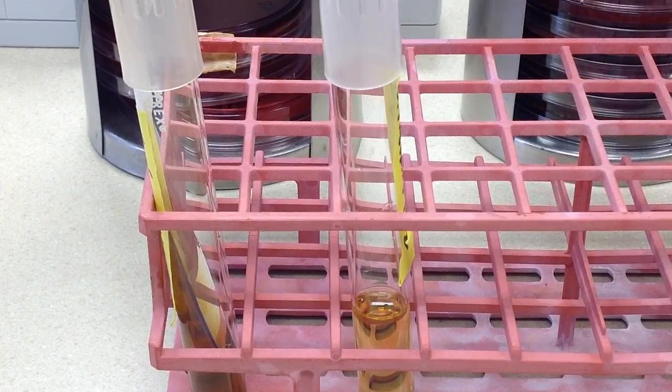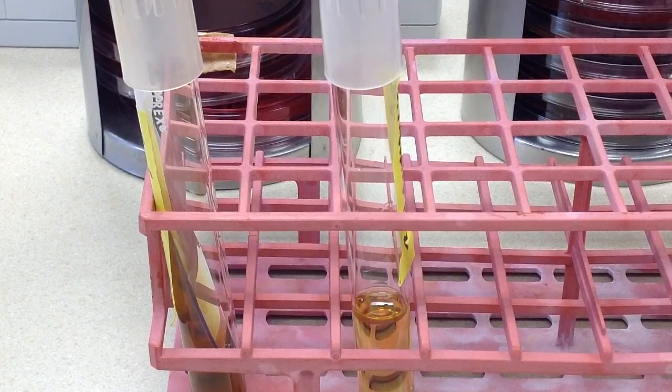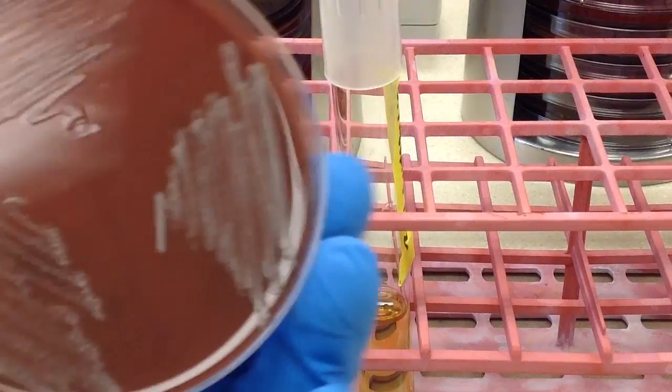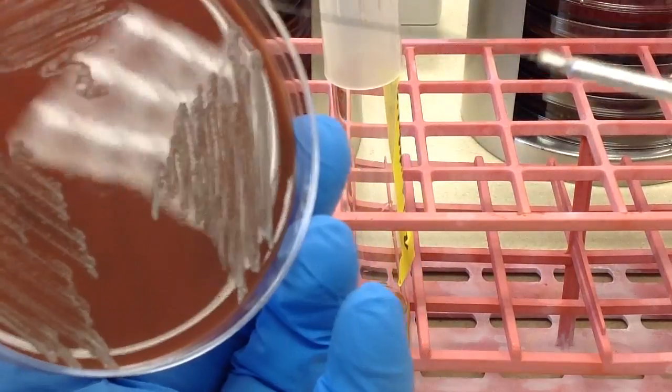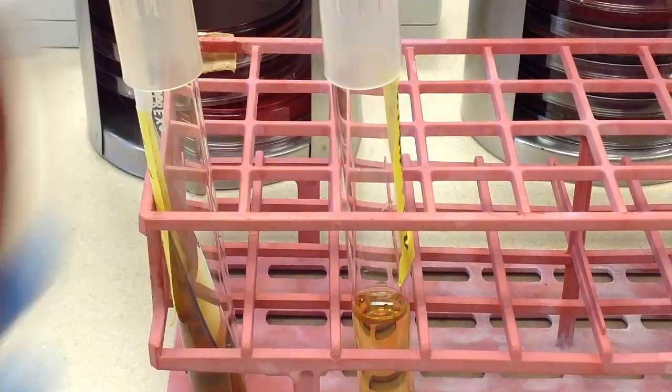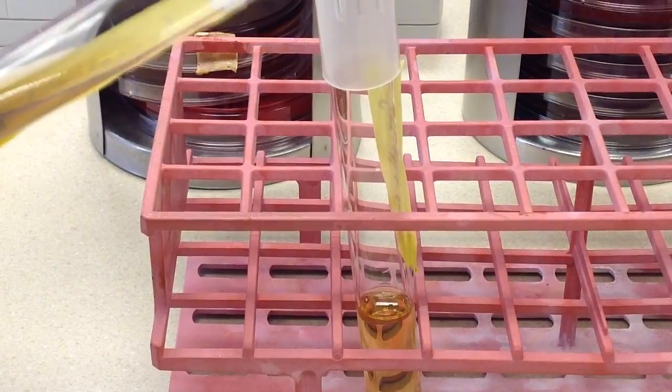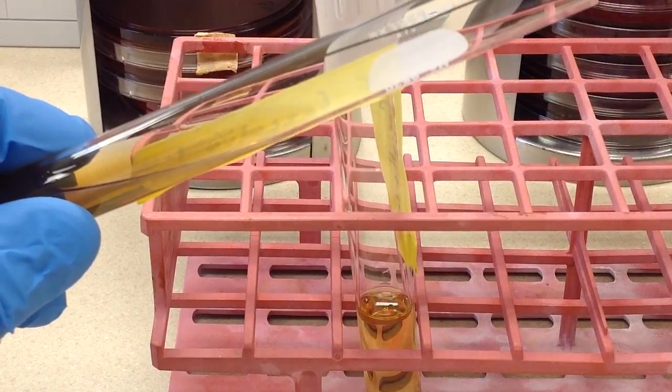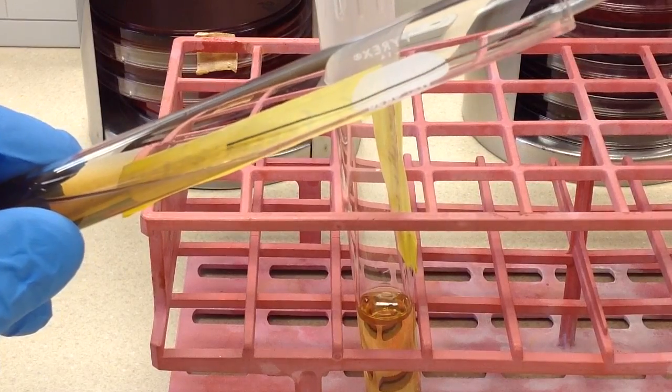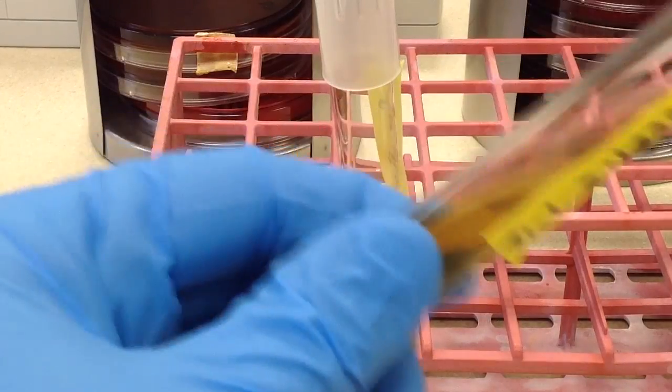First of all, when we do a slant, all we are inoculating is the face of the slant. So, I am just going to go ahead here and take a little bit of my stock organism, Enterococcus, and then all I am going to do is just run that needle along the face of that slant.